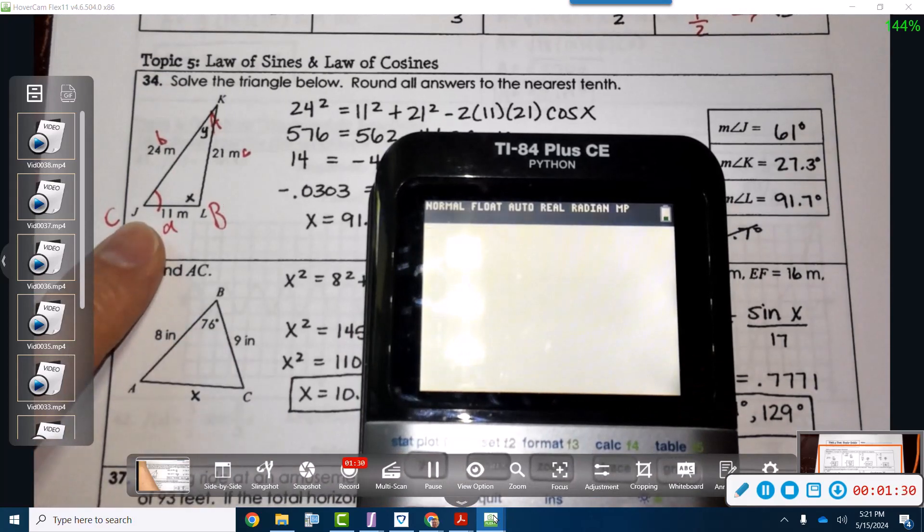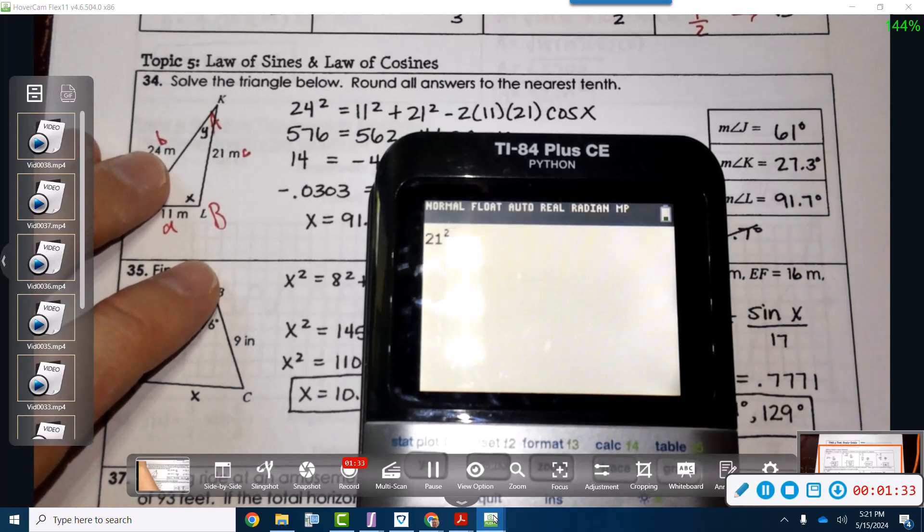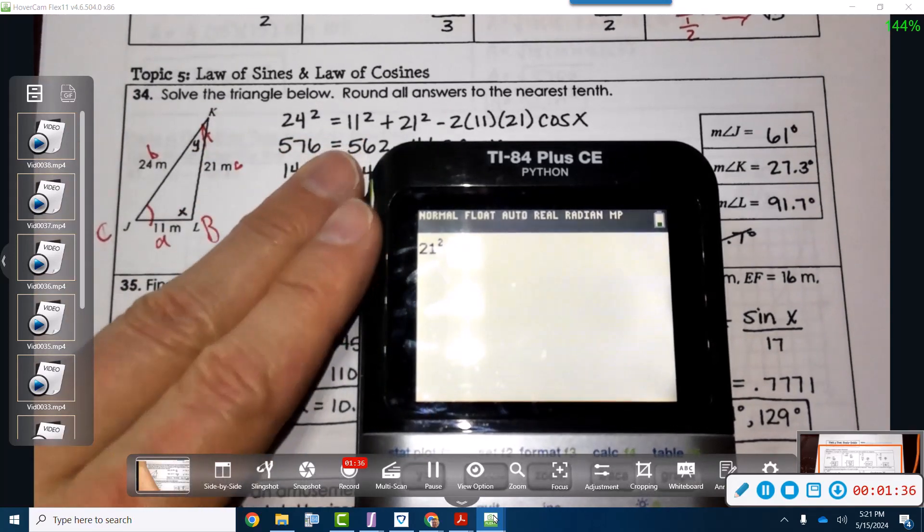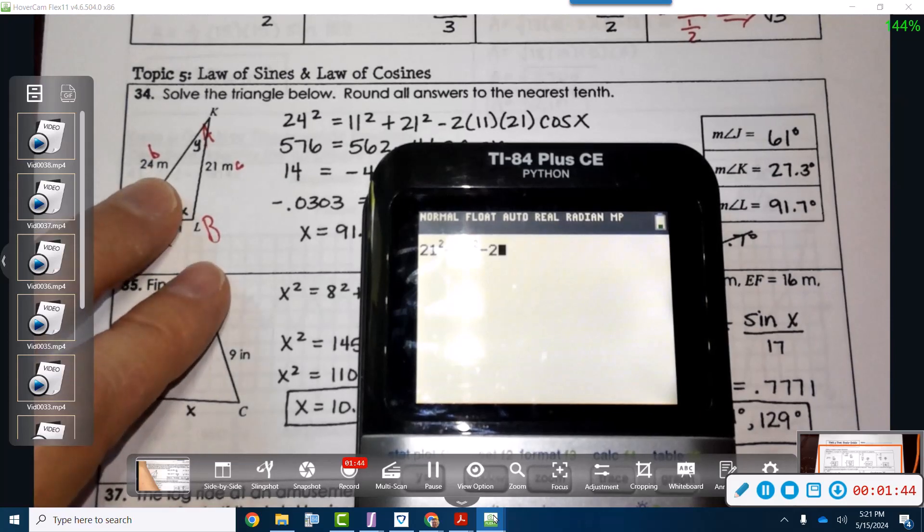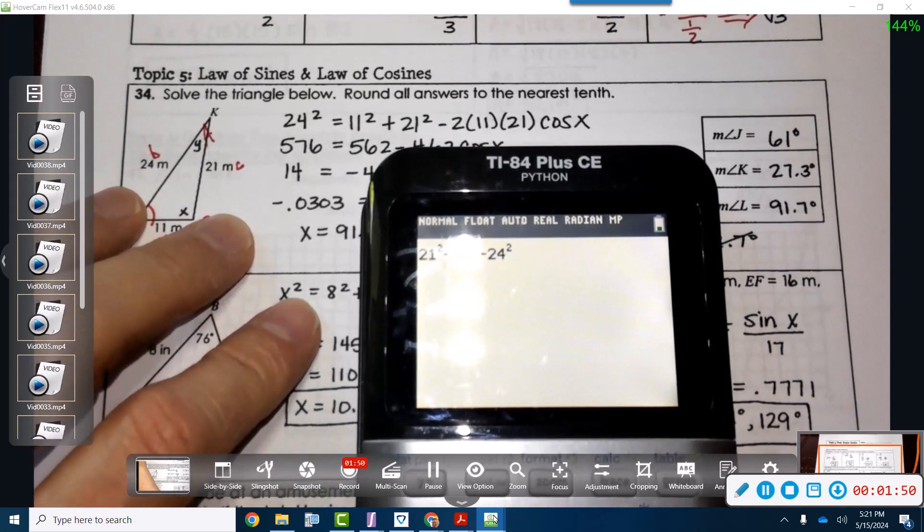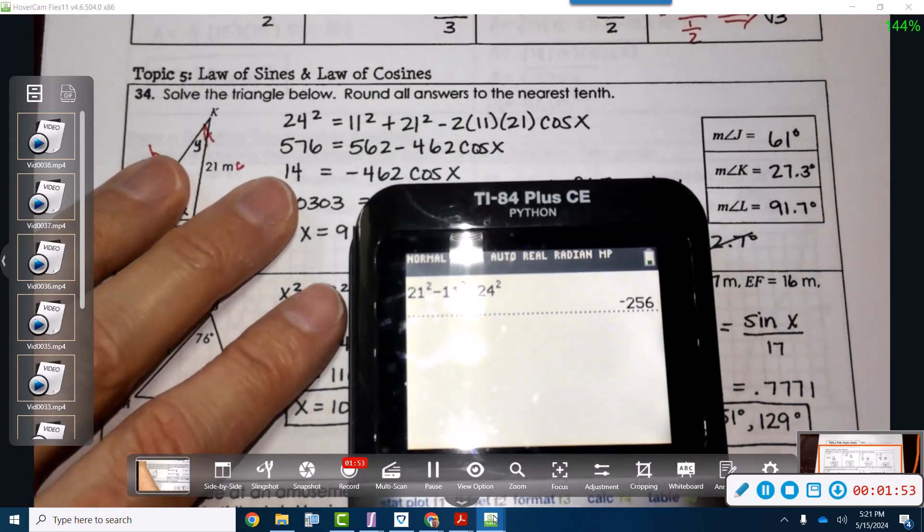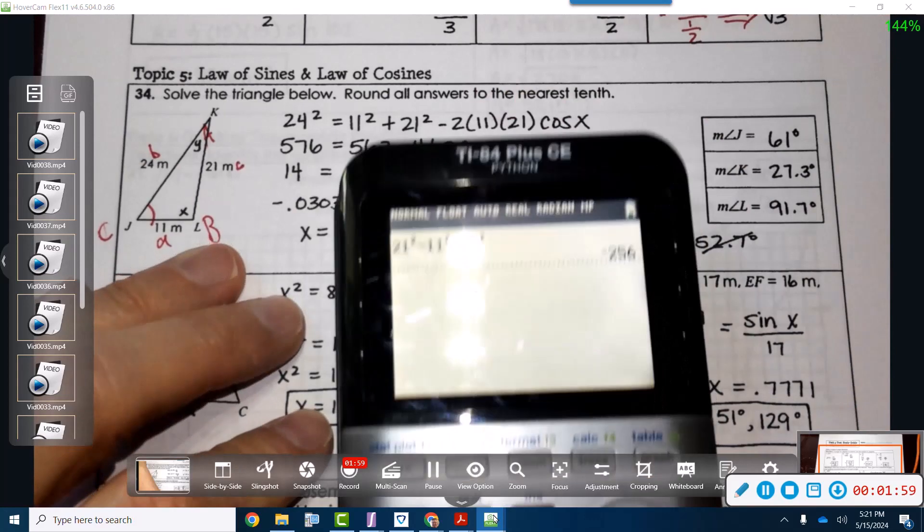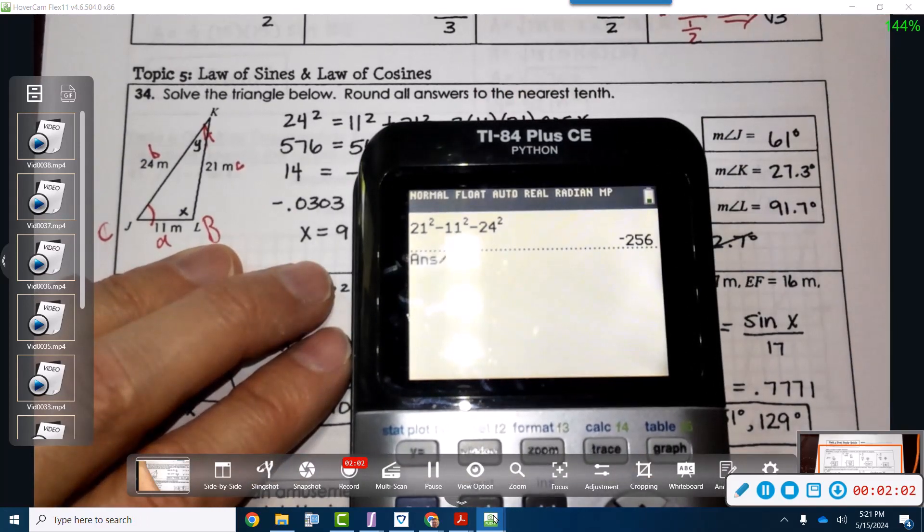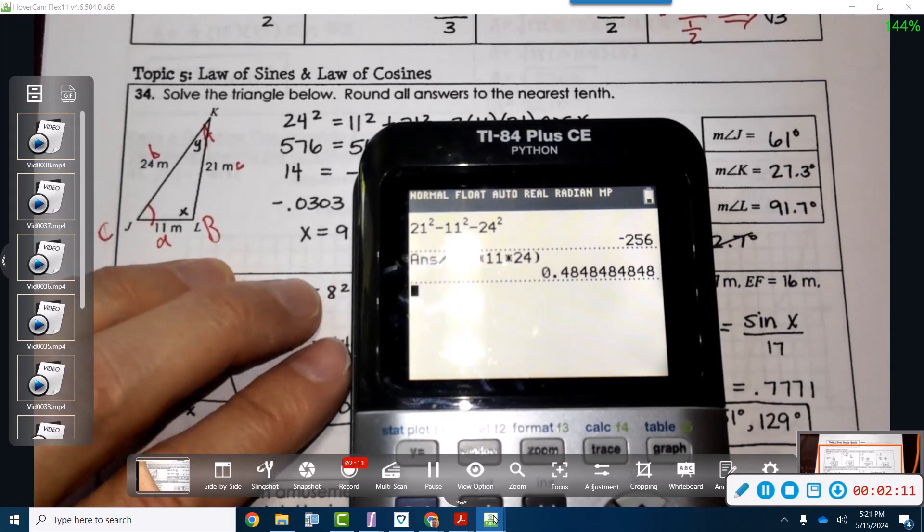According to this, I would have 21 squared minus 11 squared minus 24 squared. Negative 256. Now I'm going to divide by negative two times A times B, negative two divided by negative two times A times B. 0.48 repeating.